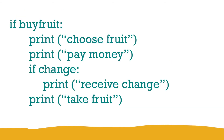Looking at the code for 'if buy fruit': we have print statements, then 'if change, print receive change' — which will only happen if change is true — and print 'take fruit'. Print 'choose fruit', print 'pay money', and print 'take fruit' will all happen if buy fruit is true. Receive change will only happen if change is also true.